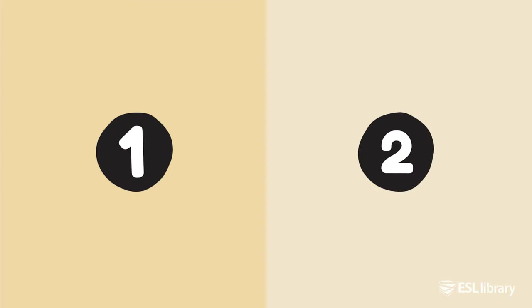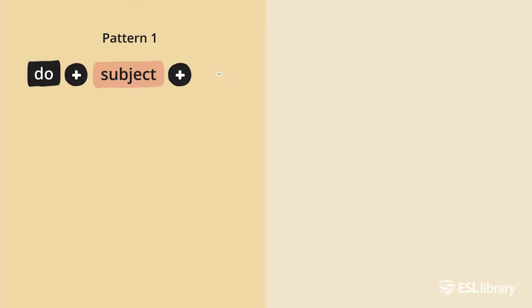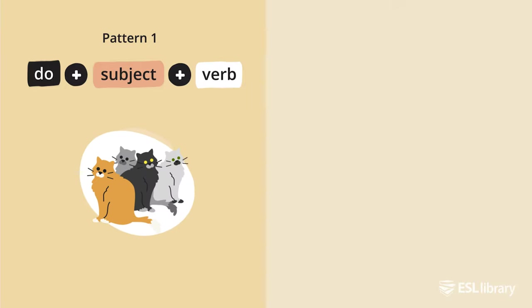There are two common question patterns for the simple present tense in English. One common pattern is: do + subject + verb. An example of this question pattern is: 'Do you like cats?'